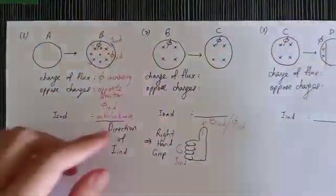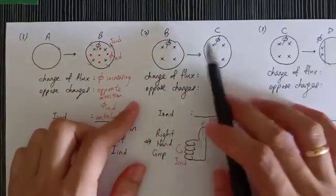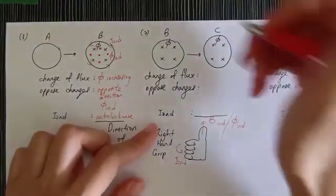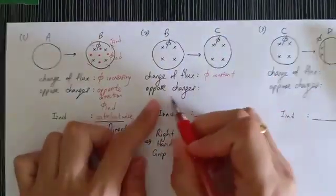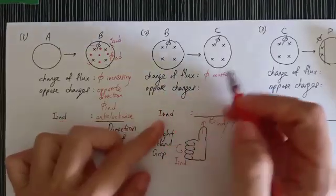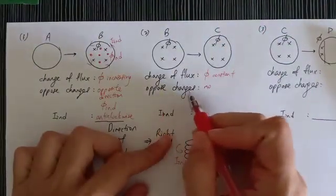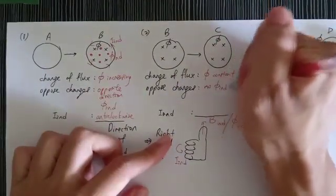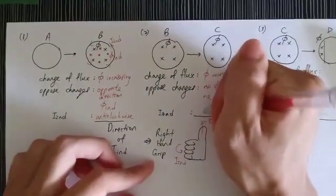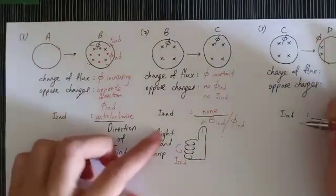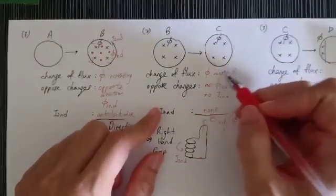For the second situation, from B to C: the original flux has no changes. B is full of flux, and C is also full of flux, so the change of flux here is no change. The original flux is constant — no increase, no decrease — so there's no changes to oppose. Since there's no changes of flux, there's no induced flux produced, and therefore there's no induced current, because there's no changes of flux happening.